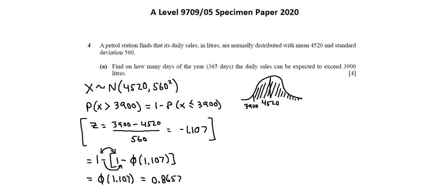To complete our requirement, how many days of the year do we expect daily sales to exceed 3,900 liters? We take our probability, 0.8657, we multiply by 365, which calculates to 316 days.